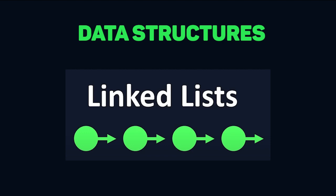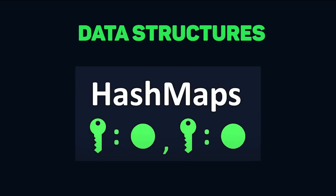Secondly, you'll learn linked lists, which are similar to arrays in that they are ordered collections of data, but they are stored differently in memory. After this, you'll move on to hash maps, which are also collections of data. But instead of using numerical indices to store data like arrays, you can use custom keys.